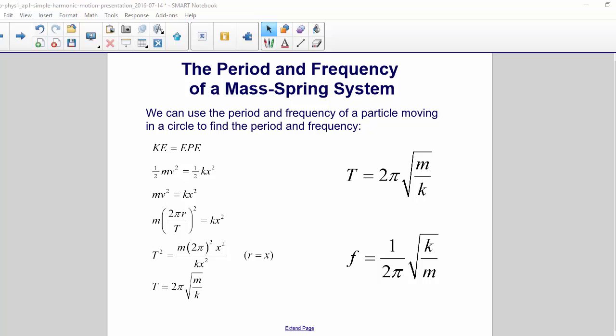And for the frequency, since frequency equals 1 over the period, it is equal to 1 over 2π times the square root of k over m.